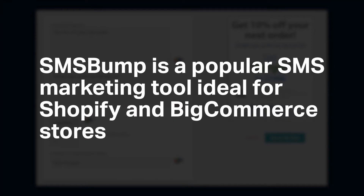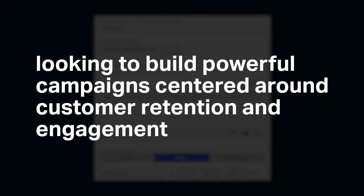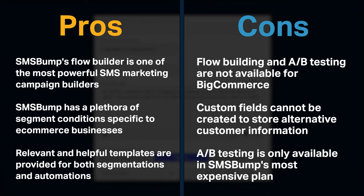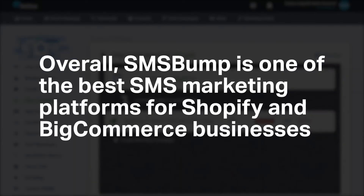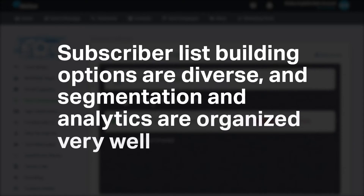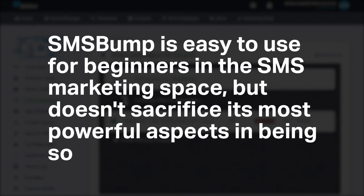SMS Bump is a popular SMS marketing tool, ideal for Shopify and BigCommerce stores looking to build powerful campaigns centered around customer retention and engagement. Its Flow Builder is one of the most powerful SMS marketing campaign builders, with a plethora of segment conditions specific to e-commerce businesses and helpful templates for both segmentation and automations. However, Flow Building and A/B Testing are not available for BigCommerce, custom fields cannot be created to store alternative customer information, and A/B Testing is only available on the most expensive plan. Overall, SMS Bump is one of the best SMS marketing platforms for Shopify and BigCommerce businesses — subscriber list building options are diverse, segmentation and analytics are well organized, and it's easy to use for beginners without sacrificing its most powerful aspects.